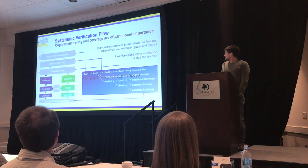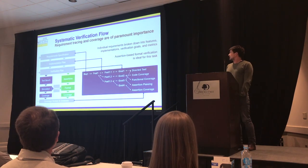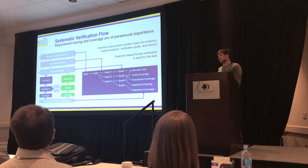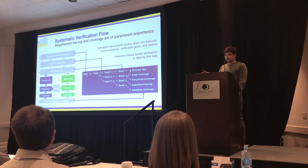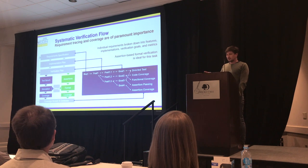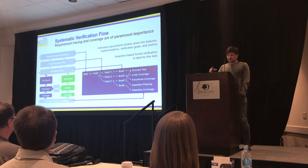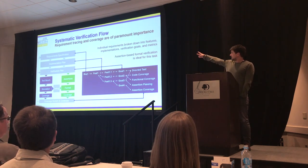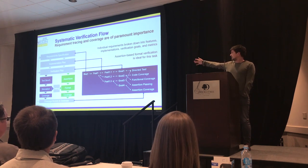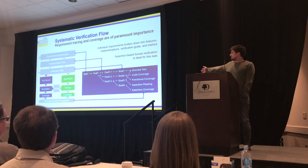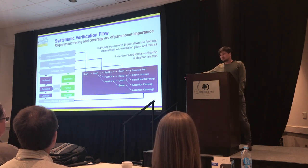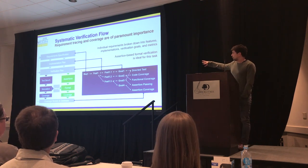In a systematic verification flow, everything starts from a requirement that is broken into individual features and sub-features, and for each sub-feature there is a verification goal. It's the decision of the verification engineer what kind of verification to apply — direct test, formal, etc. Assertion-based formal verification is ideal for this task. As shown in the graph, everything starts from requirements and ends up in a verification plan. From there, an engineer decides whether this part is verified by simulation or by formal. At the end of the day, everything ends up in some coverage results that go back into a common database.